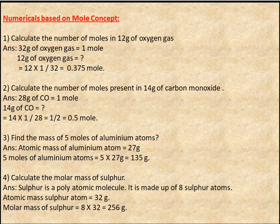Q4: Calculate the molar mass of sulfur. Sulfur is a polyatomic molecule made up of 8 sulfur atoms. Atomic mass of sulfur = 32g. Molar mass of sulfur = 8 × 32 = 256 grams.